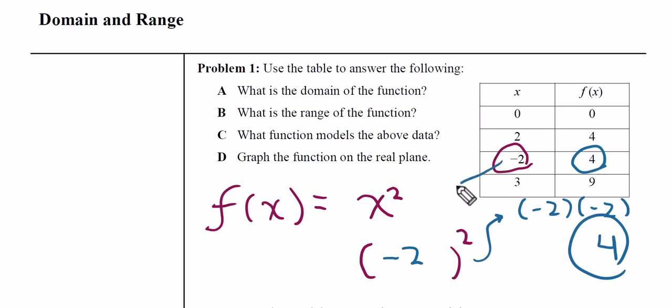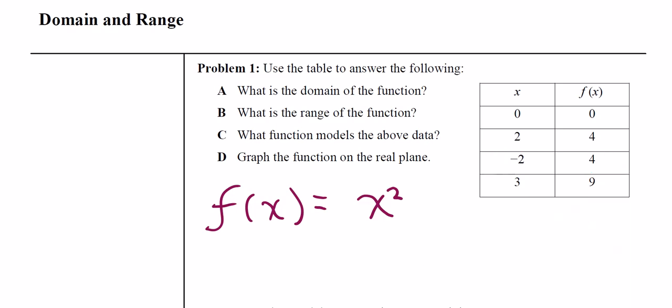So if I plug in a domain of negative 2, I get a range of 4. It is always well to check all of the options. Make sure that each of these inputs gives me these outputs, based on this function that we created for part c. And it checks out.